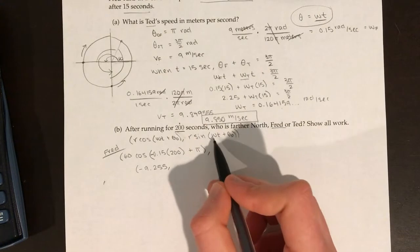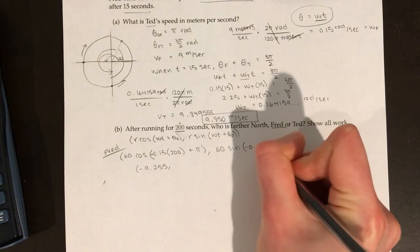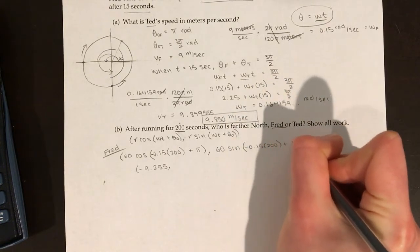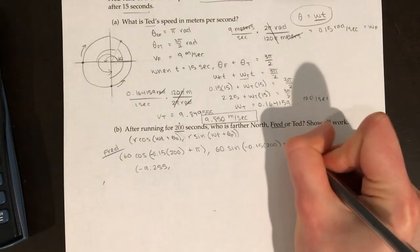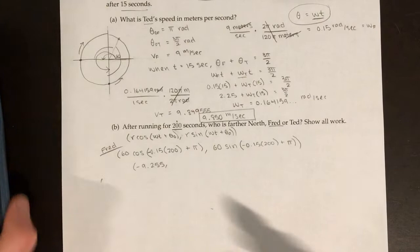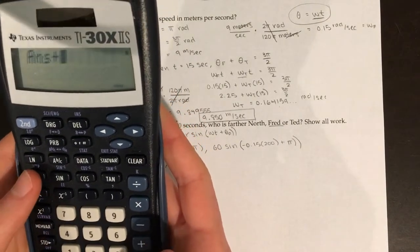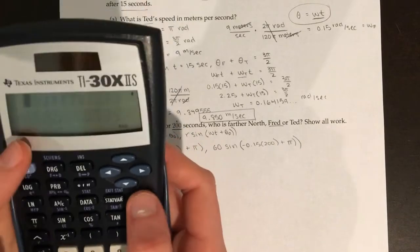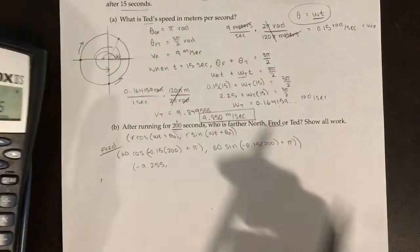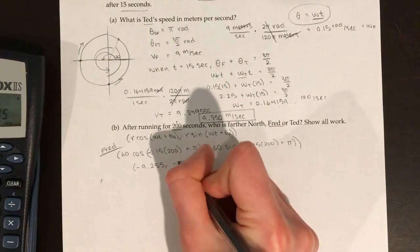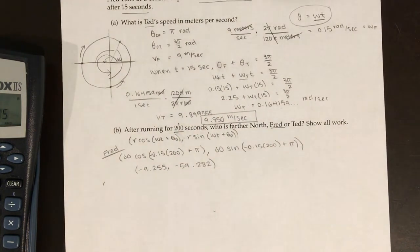Now for Fred's y-coordinate: r × sin(ωt + θ₀) = 60 × sin(−0.15 × 200 + π). Plugging that into the calculator, I get Fred's y-coordinate is approximately −59.282. Those are Fred's coordinates: (−9.255, −59.282).